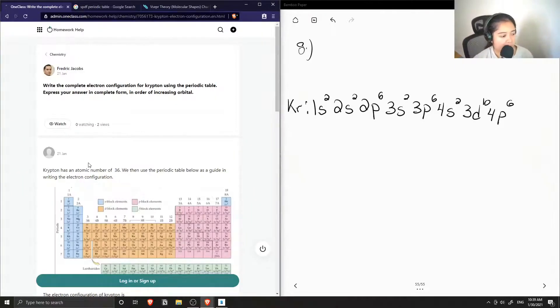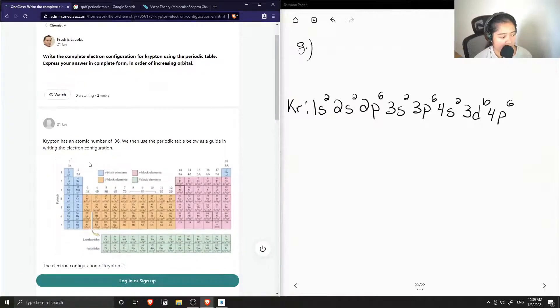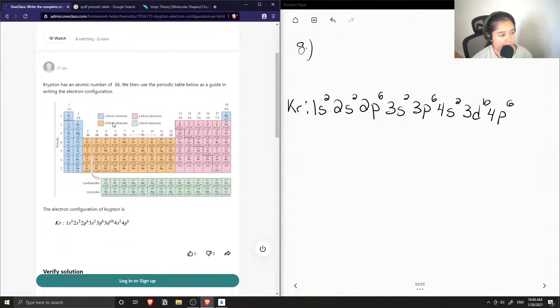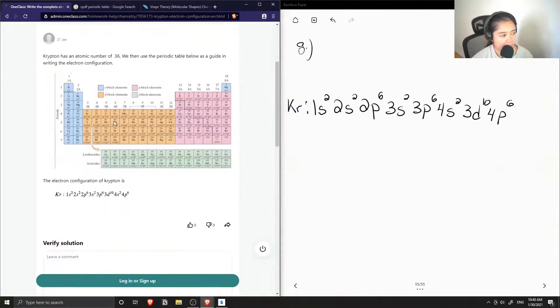So now if we see what the junior tutor said, they said that krypton has an atomic number of 36. We then use the periodic table below as a guide in writing the electron configuration. Okay, so this periodic table is kind of hard to read, but it's pretty helpful because they write out all of their electron configurations and how they end off.